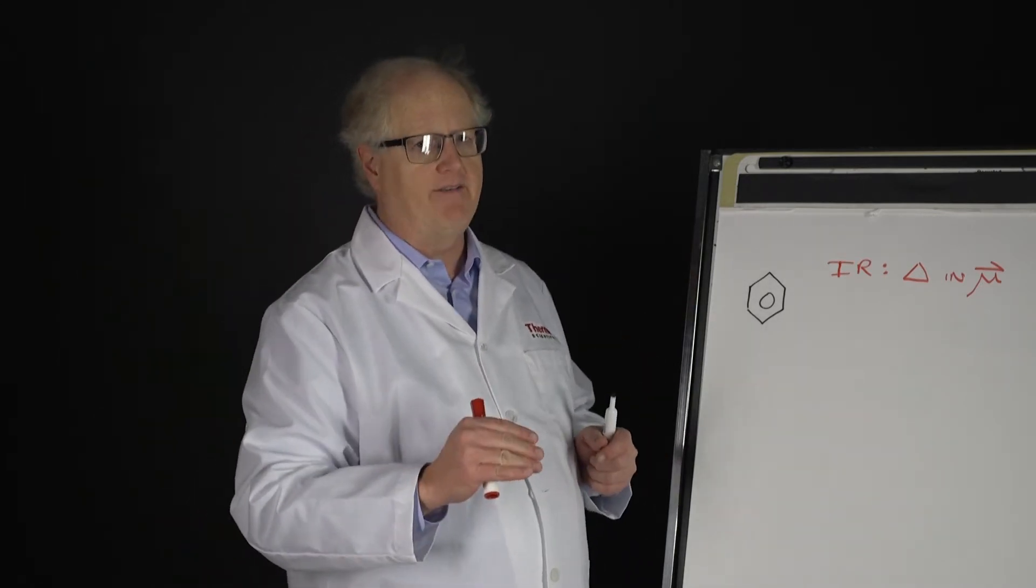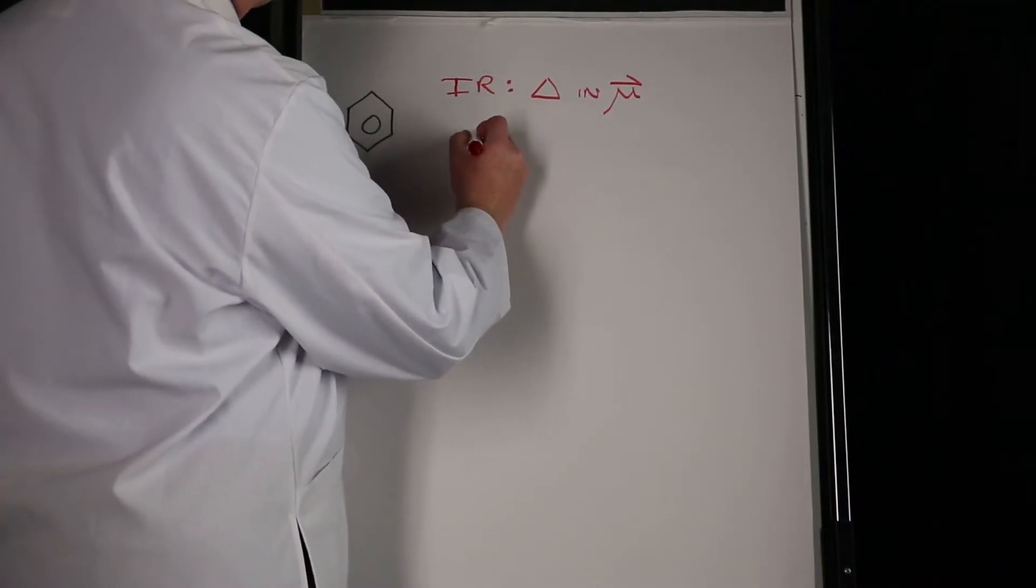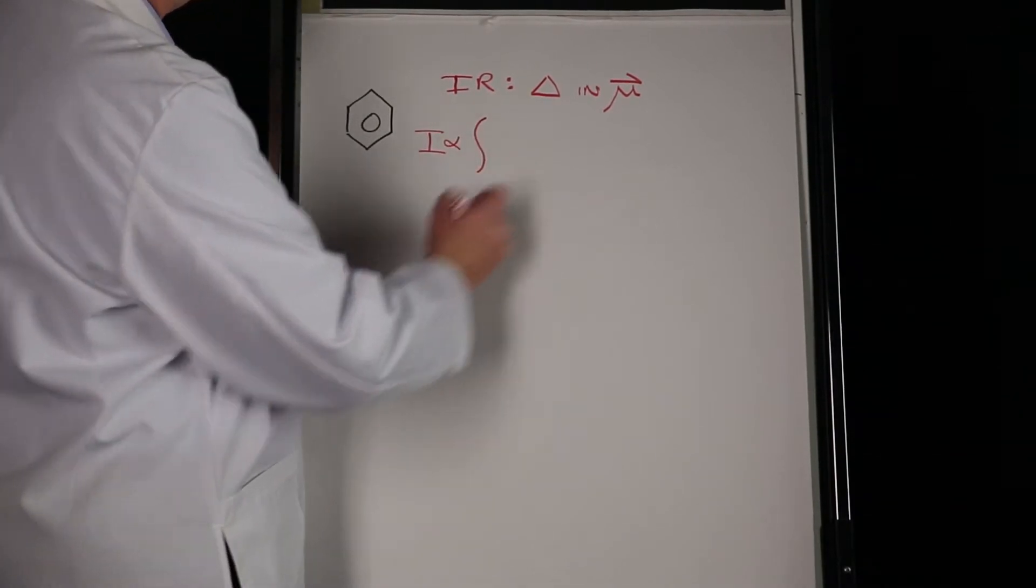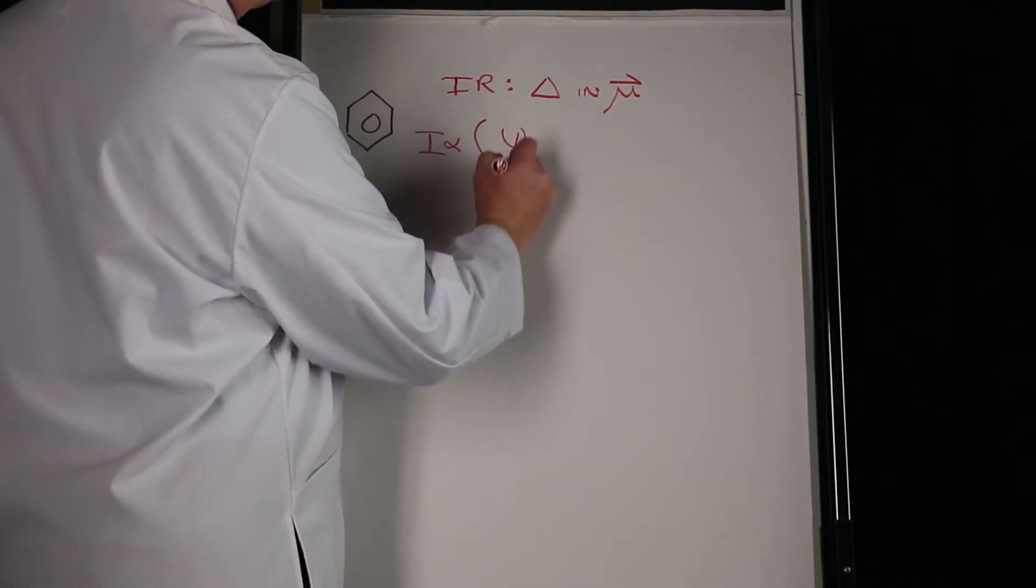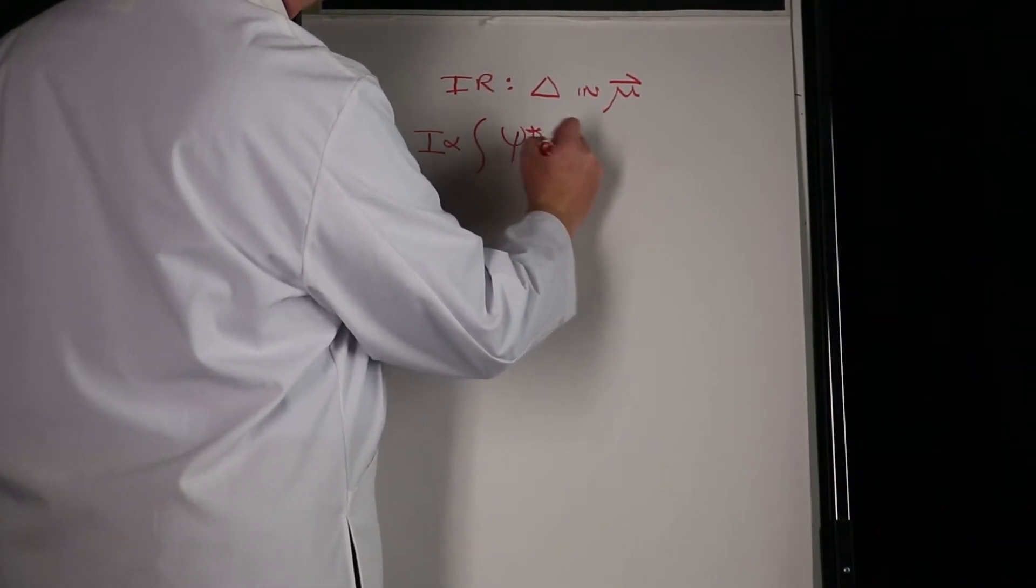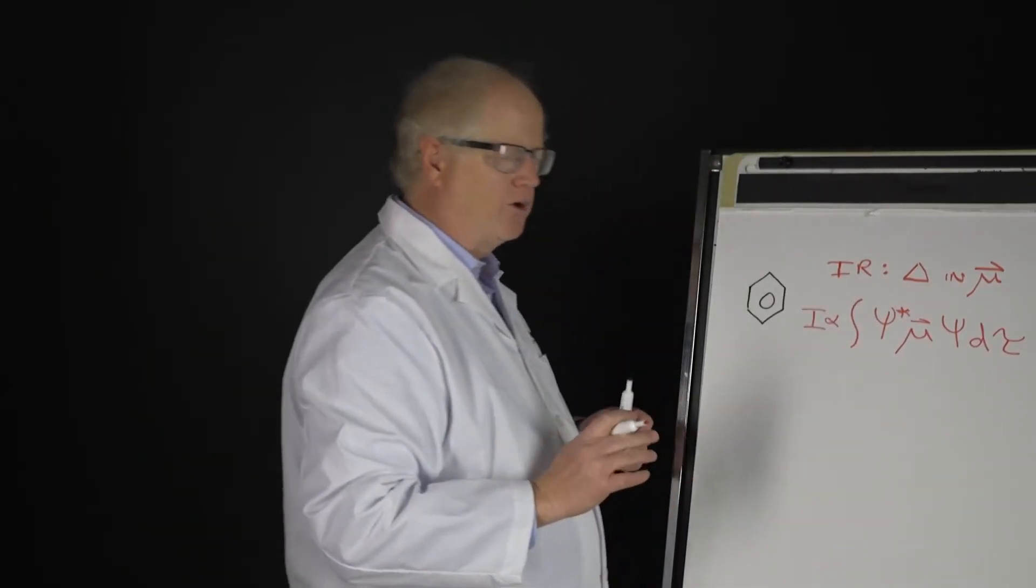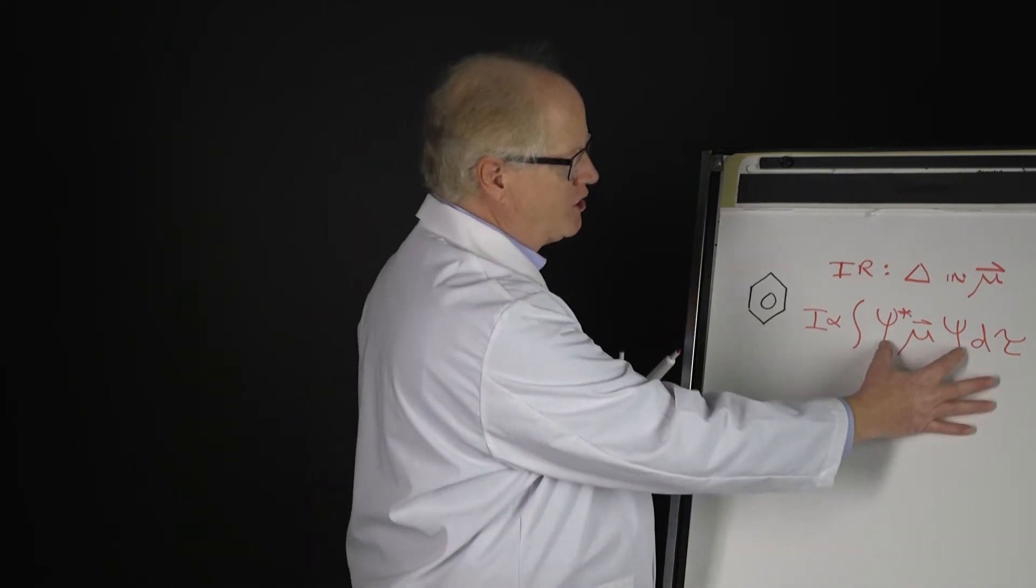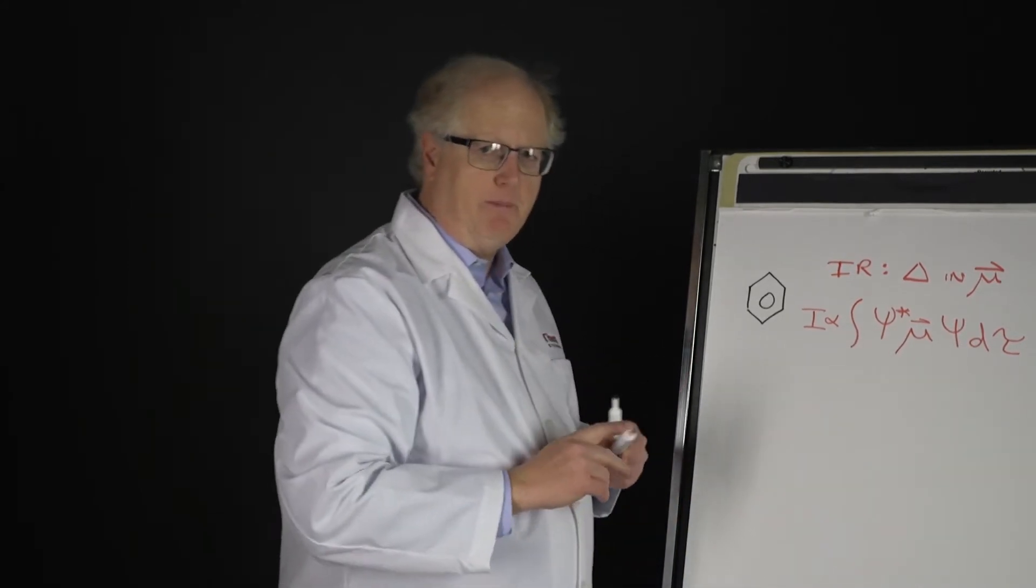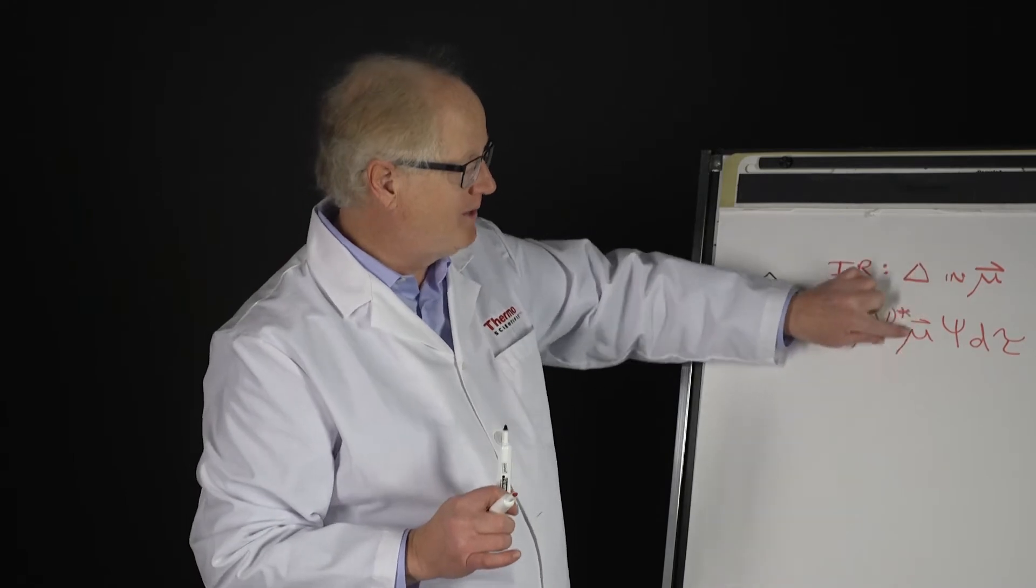Mathematically, the intensity is proportional to ∫ψ*μψdτ - that's the mathematical equation where ψ represents the wave functions for ground and excited states, and μ is the dipole moment. If the dipole moment change is zero, this term is zero, the whole thing is zero, and you don't see any infrared spectrum.